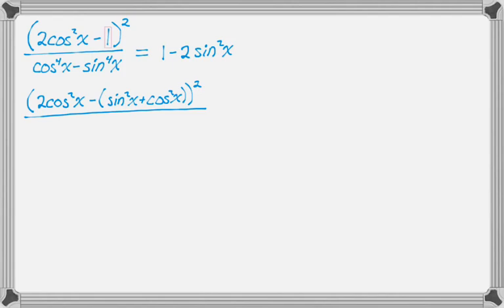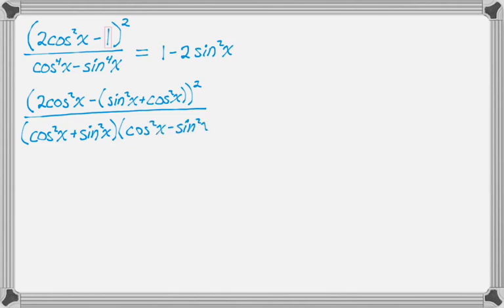The denominator is actually a 4th power minus a 4th power, which is a difference of squares. So what I'm going to do is factor that into cosine squared plus sine squared times cosine squared minus sine squared. That's a really common thing to do, because cosine squared plus sine squared is 1. I just used that in the numerator to expand 1 and make it more complicated, and here I'm going to use it to make the denominator less complicated.